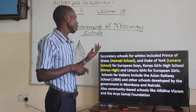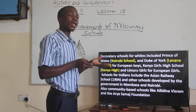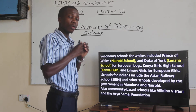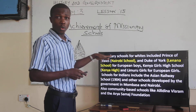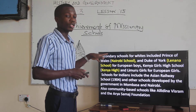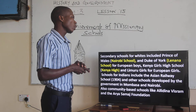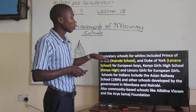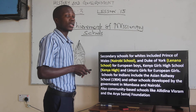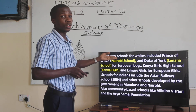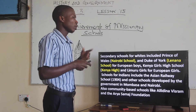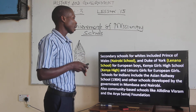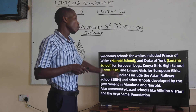Secondary schools for whites included the Prince of Wales, which was the Nairobi School — preserved only for whites. The Duke of York was Lenana School. There was also the Kenya Girls High School for European girls, and the Uruka school for European girls as well. These schools were strictly segregated for the white community.